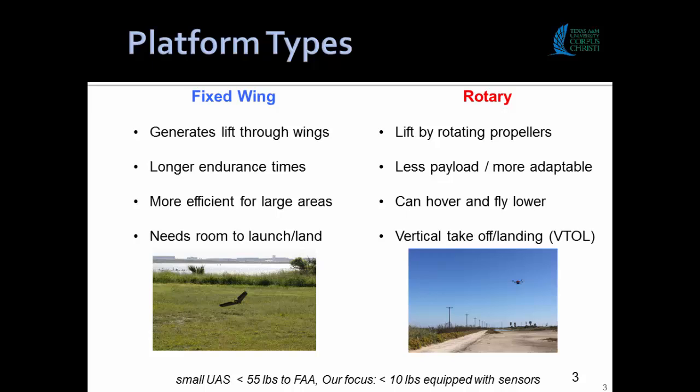There are basically two broad categories of unmanned aircraft systems: fixed wing and rotary craft. The advantage of fixed wing is they're more efficient — they generate lift through the wing, high pressure below, low pressure above. So generally they offer better endurance per battery, which means longer flight times. They're better at mapping larger areas.